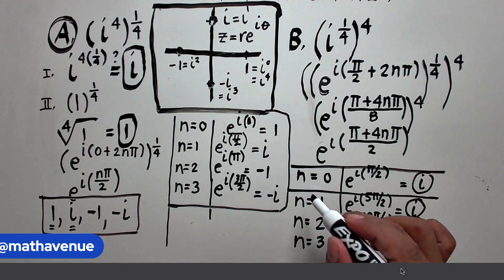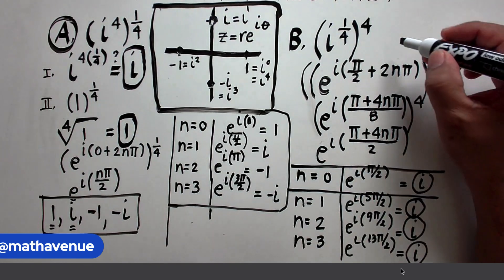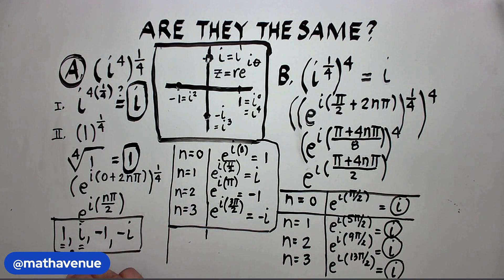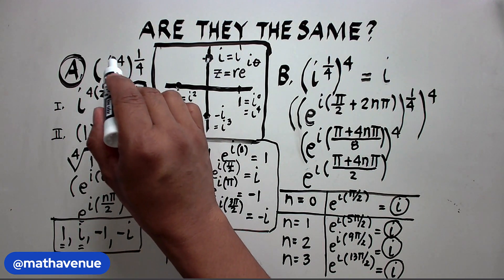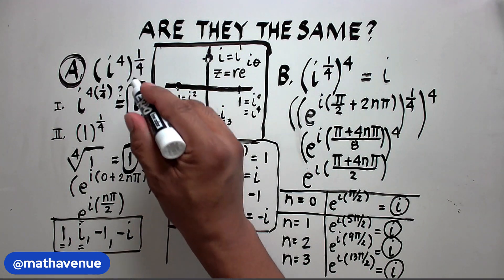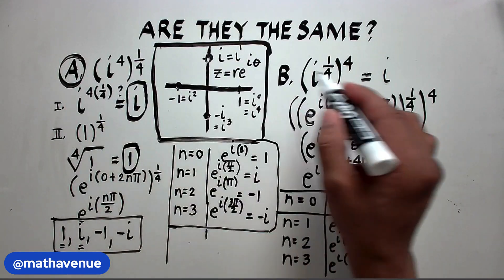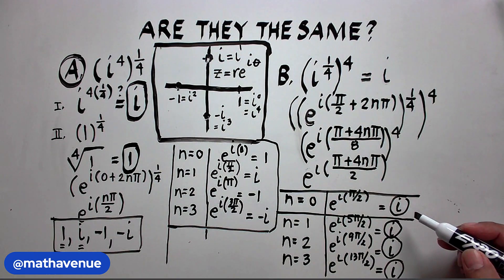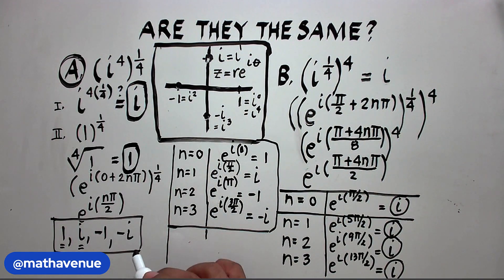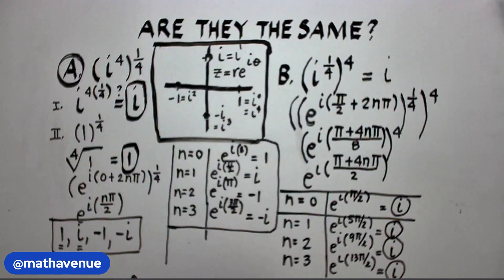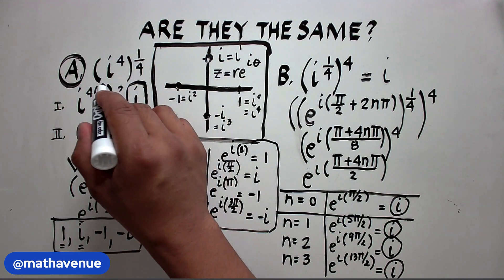So in Letter A we get four distinct values — 1, i, negative 1, and negative i — while in Letter B all values are i. Both expressions are multi-valued, but Letter B always yields i. The main lesson: when applying the power of a power rule with non-integer exponents, be very careful with complex numbers. The same caution applies to the power of a product and the power of a quotient.